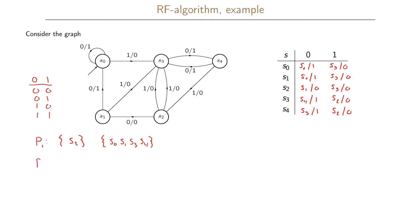In the next step we form P2 by further dividing the blocks based on the next-state function. S2 is not further divided because it already contains only one state. Looking at the next group, both S0 and S1 go to this same group regardless of input: with input 0 they go to S0, and with input 1 they go to S3, both within this group. So S0 and S1 remain in the same partition.